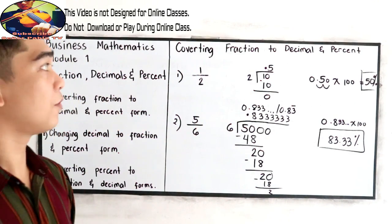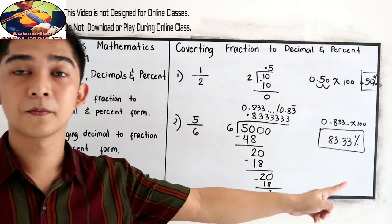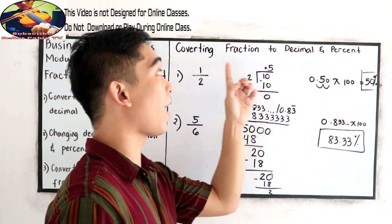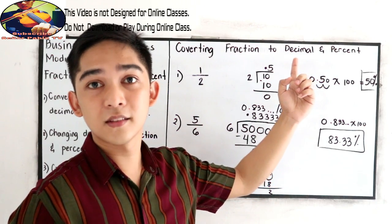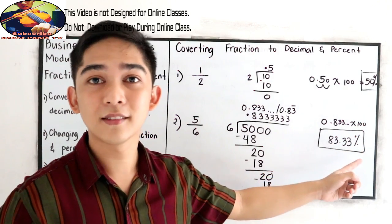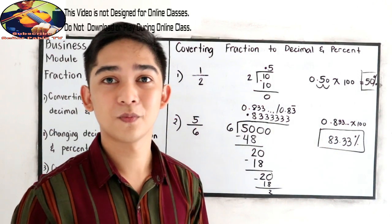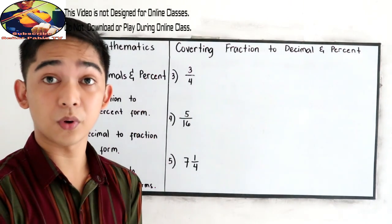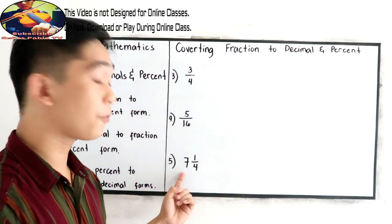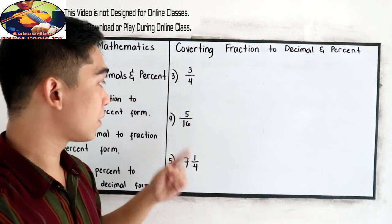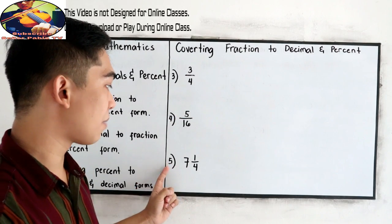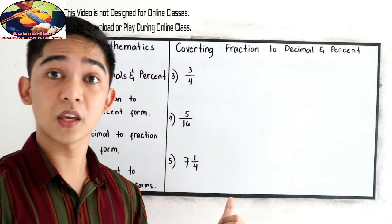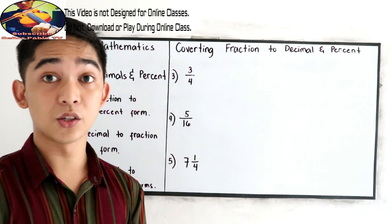In order to get the percent, you need to convert the fraction into decimal first. Then after getting the decimal, just multiply by 100 and write the percent sign. Now I want you to try the following examples: number 3 is 3 over 4, number 4 is 5 over 16, and number 5 is 7 and 1/4. You can pause the video to answer, then resume to check your answers.